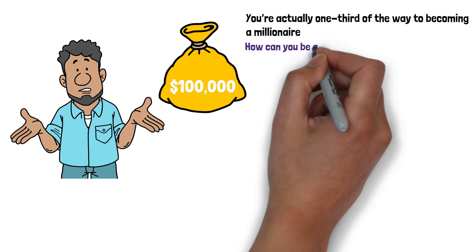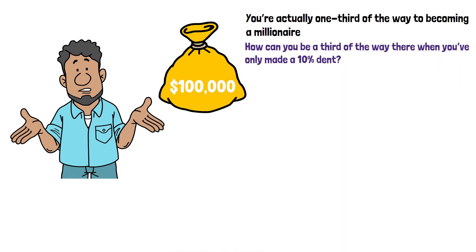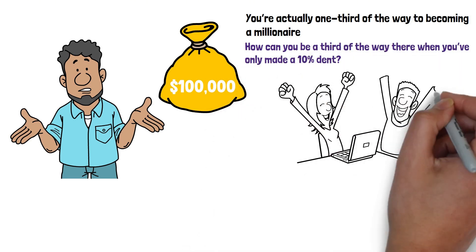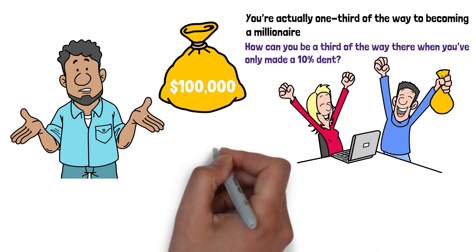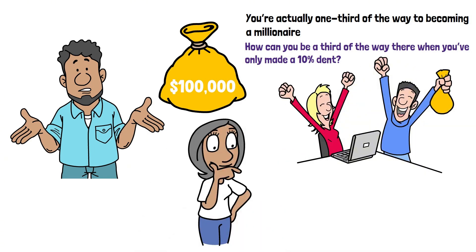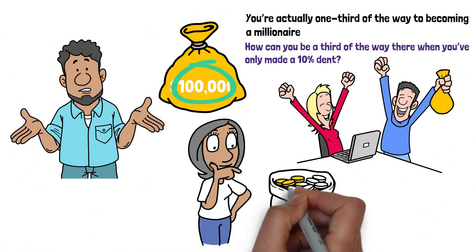How can you be a third of the way there when you've only made a 10% dent? The answer reveals one of the most misunderstood truths about wealth. And once you understand it, you'll realize why the people who make it to $100,000 almost always go on to become millionaires.